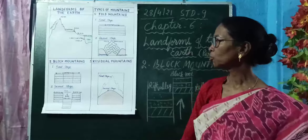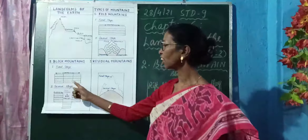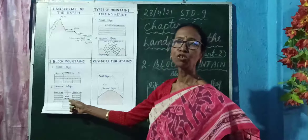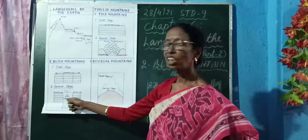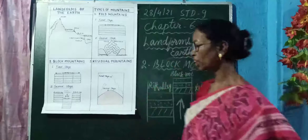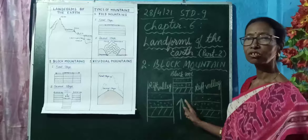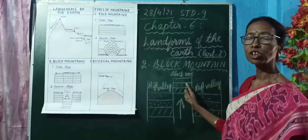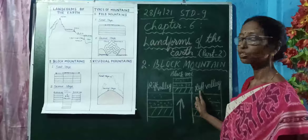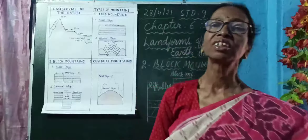You should remember that the formation of block mountains takes place in two ways. First, when the landmass between two parallel cracks sinks down or subsides, the upraised part beside this valley forms block mountains, and the sinking part forms a rift valley. Second, when the landmass between two parallel cracks is pushed up vertically by internal pressure, that forms block mountains, and the lower parts beside it form rift valleys. So, wherever there are block mountains, there are rift valleys.